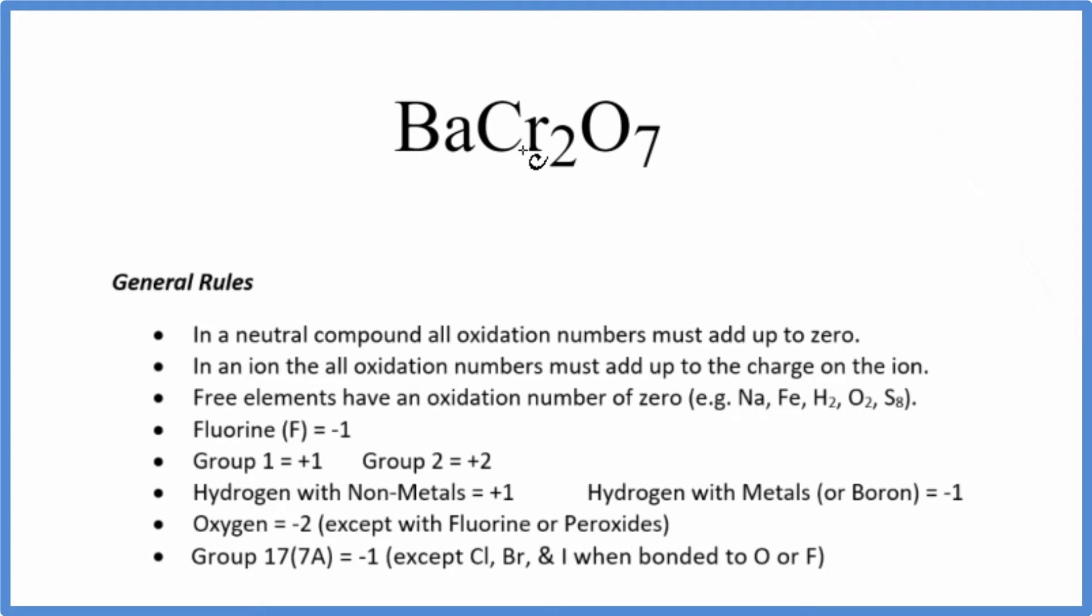In this video, we'll find the oxidation number for the chromium in barium dichromate, BaCr2O7. When we look at this compound here, there's no negative or positive sign after it. That's because the whole thing's a neutral compound. So because it's a neutral compound, all the oxidation numbers are going to add up to zero.